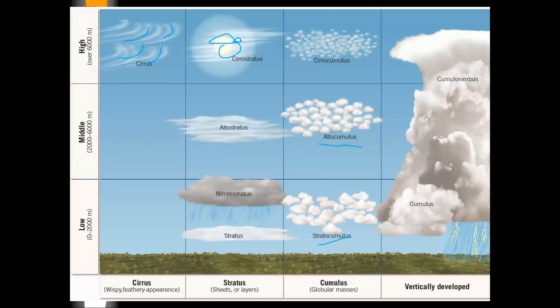Here's nimbostratus — that layered look with rain coming out. And stratus, just the lower layered clouds. Cumulus clouds are called the fair weather cloud, but if there's enough heat and moisture available, these little innocent-looking things can turn into monsters — with updrafts and downdrafts that make them so dangerous.